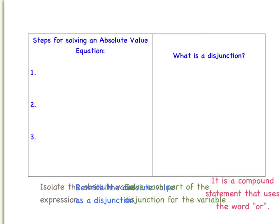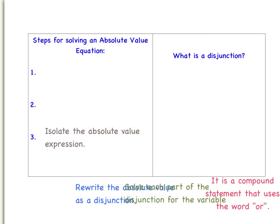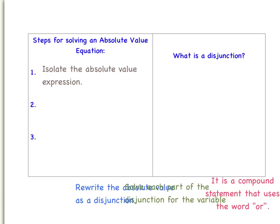When solving an absolute value equation, there are several steps you need to follow. First, you need to isolate the absolute value expression. What that means is if there are any other numbers either added or multiplied to your absolute value, you need to move those to the other side of the equation.